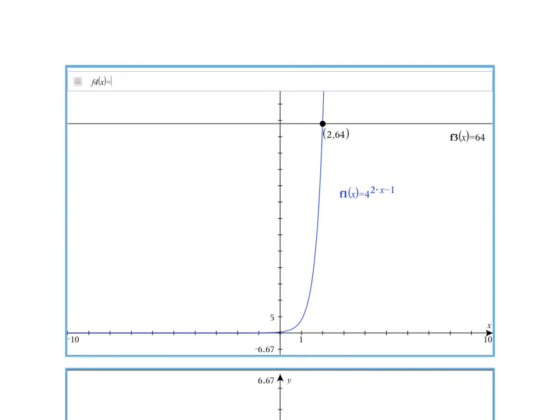That's their common intersection point, and notice that the x-coordinate of that point is 2. So that's a graphical check of our solution of 2.